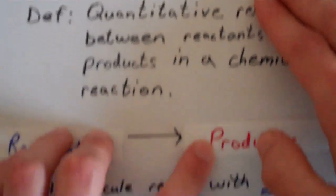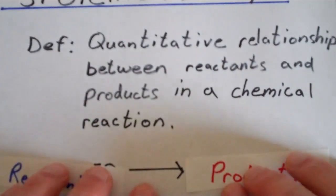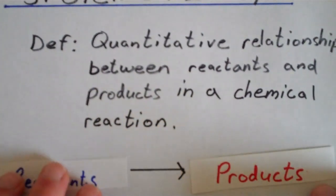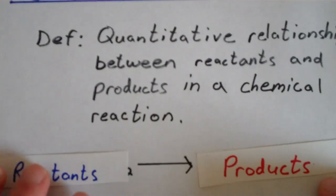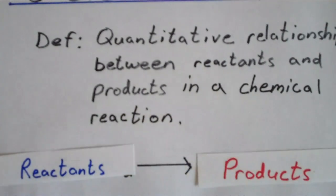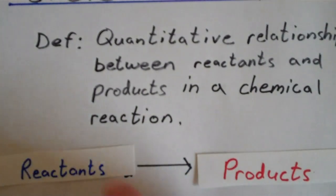So anytime you have a balanced chemical equation that shows a chemical reaction, you're going to have your reactants to the left of the reaction arrow and your products to the right of your reaction arrow.